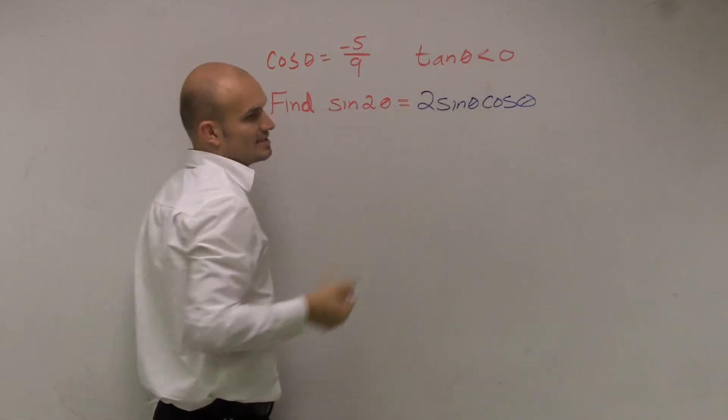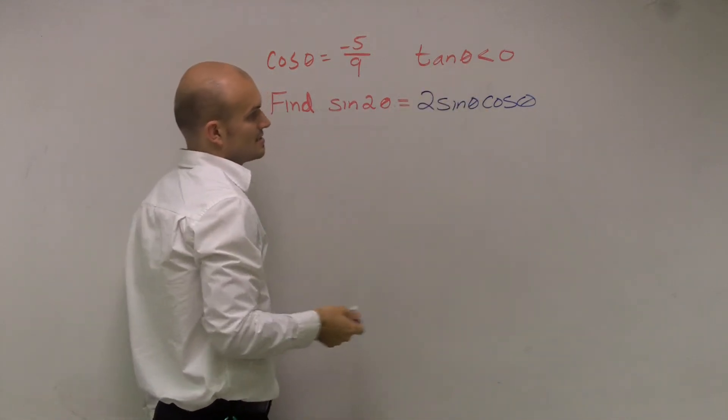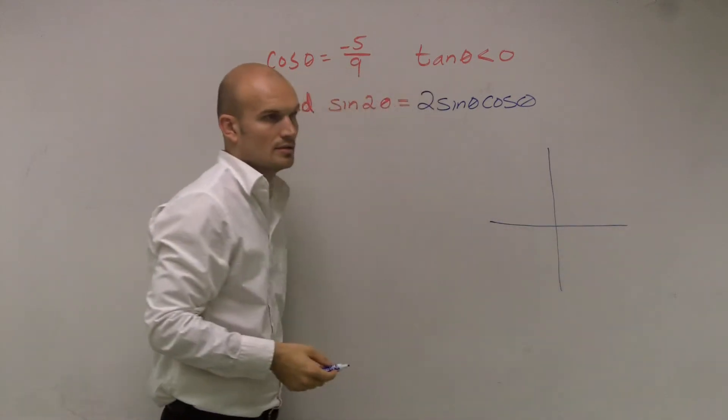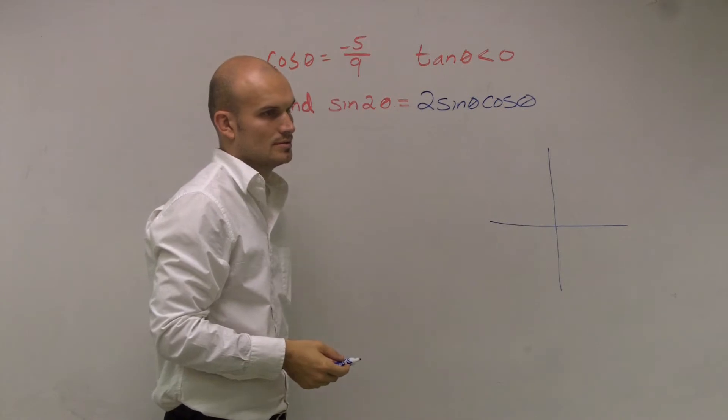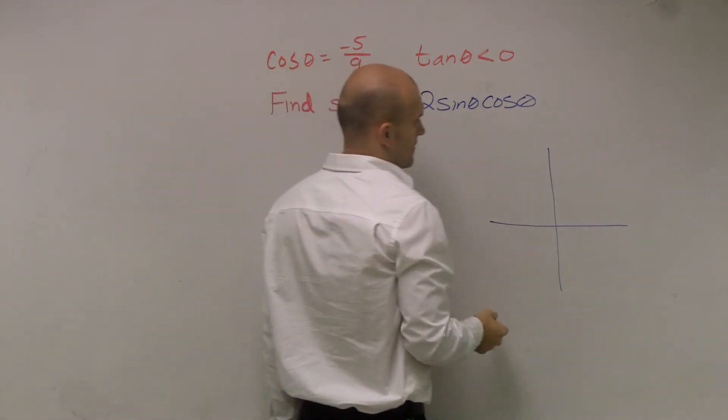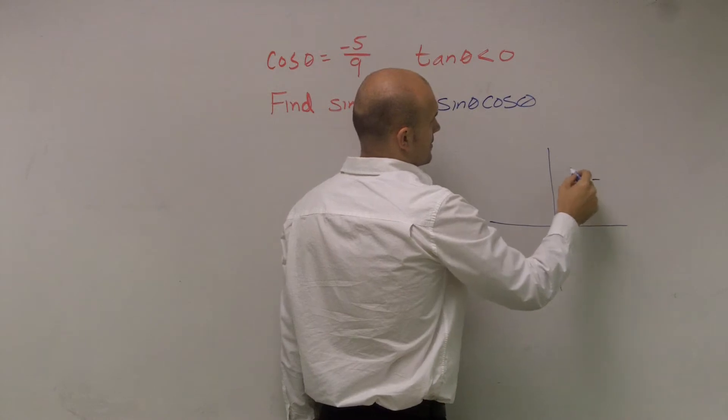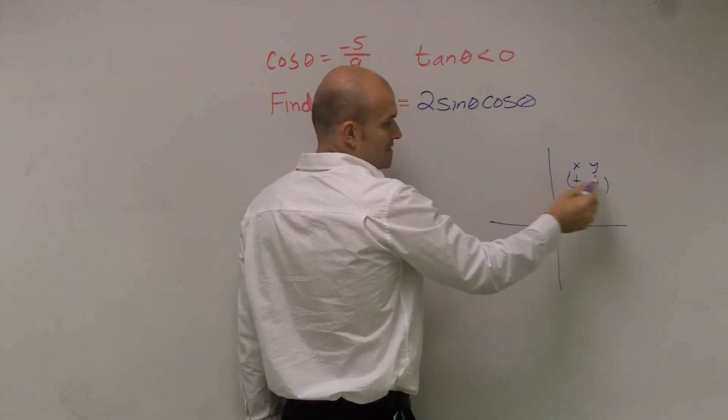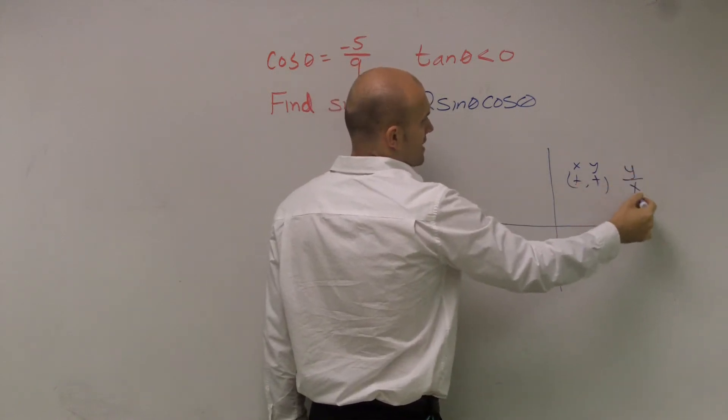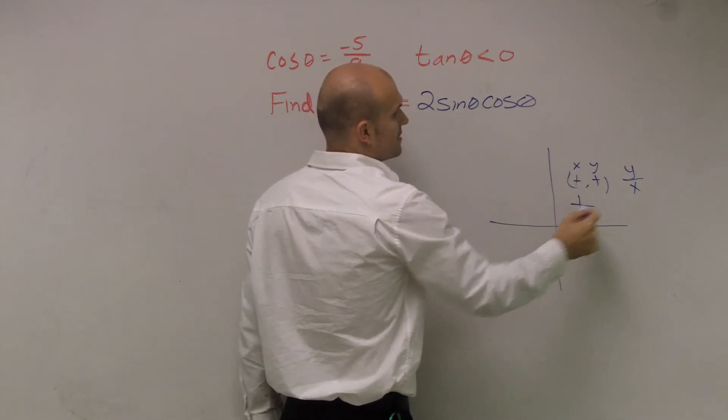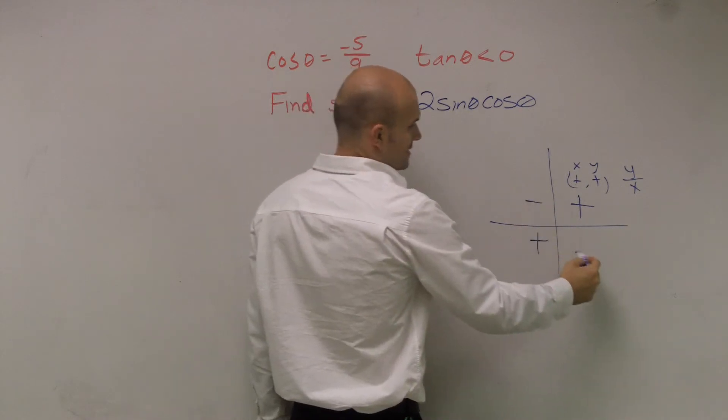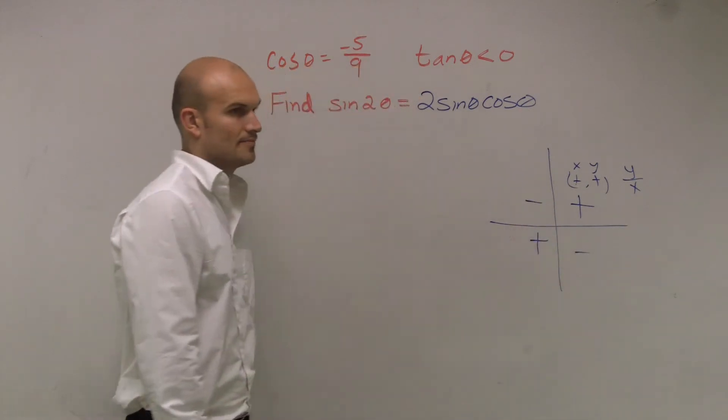Then it also says it has to be within the tangent of theta, which is less than 0. So I need to determine when is tangent less than 0. Remember, these are your x and your y coordinates, right? In the first quadrant, your x-coordinate is positive and your y-coordinate is positive. Remember, tangent is y over x. So when you have a positive or a positive, that's always going to make a positive. When you have a negative or a negative, that's going to make a positive. That means these two quadrants to be negative, okay?